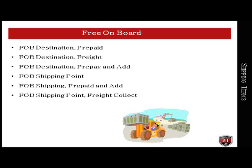FOB Shipping Point, Prepaid and Add means the seller pays the freight cost and adds the cost to the buyer's invoice. The buyer owns the goods while they are in transit and is also responsible for filing damage claims if there is any damage while in transit from the supplier to the buyer.